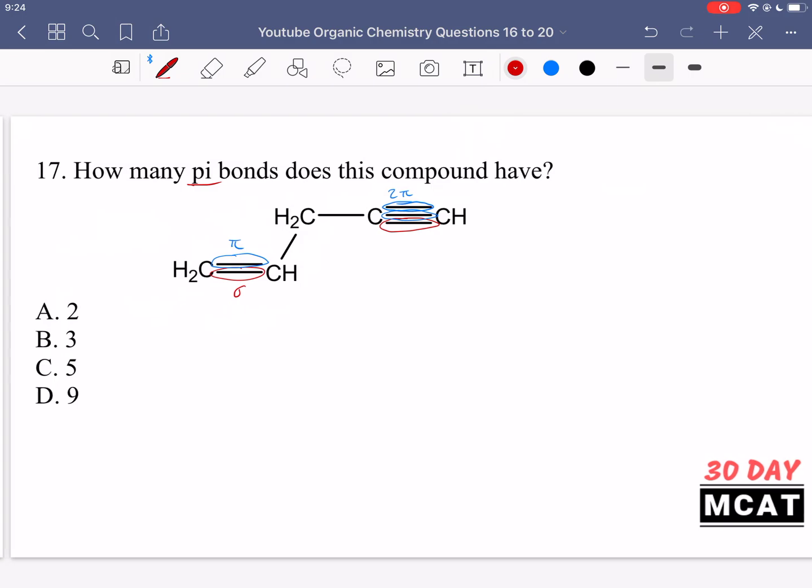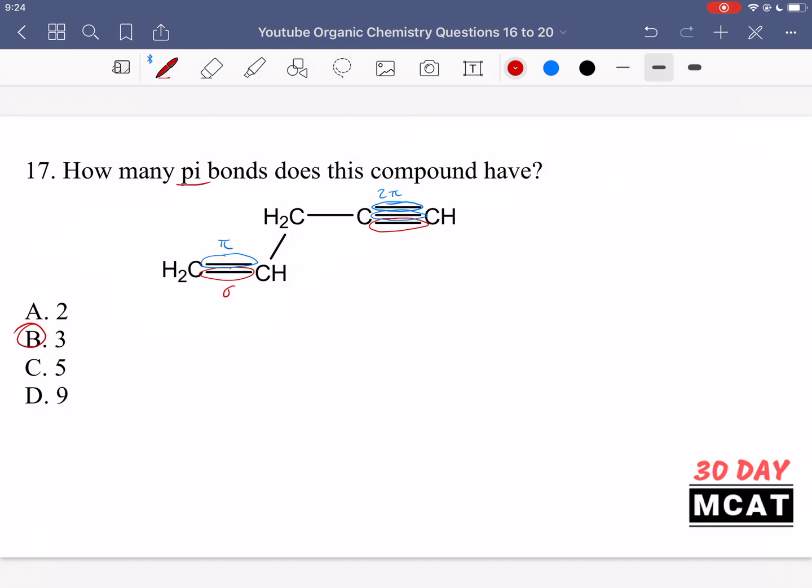So when you're looking for pi bonds, make sure you just look for these double bonds if we're talking about a carbon compound. So it's the extra bond, which is a pi bond. Overall, we have three of them.